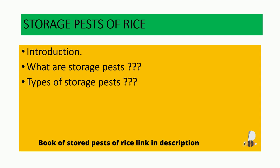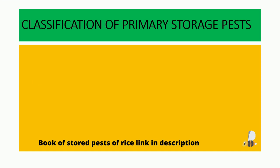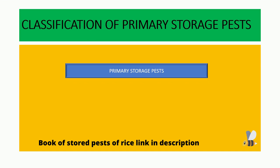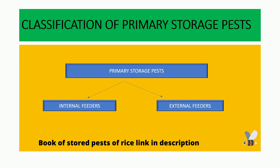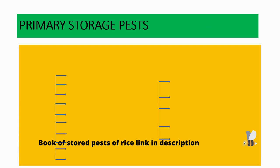In this slide we will see the classification of the primary storage pests — how the primary storage pests have been classified. The insects which damage the main source of sound grains are called primary storage pests. There are two categories: first is internal feeders, which feed on the inside of the grain, and second is external feeders, which feed on the outside of the grain.